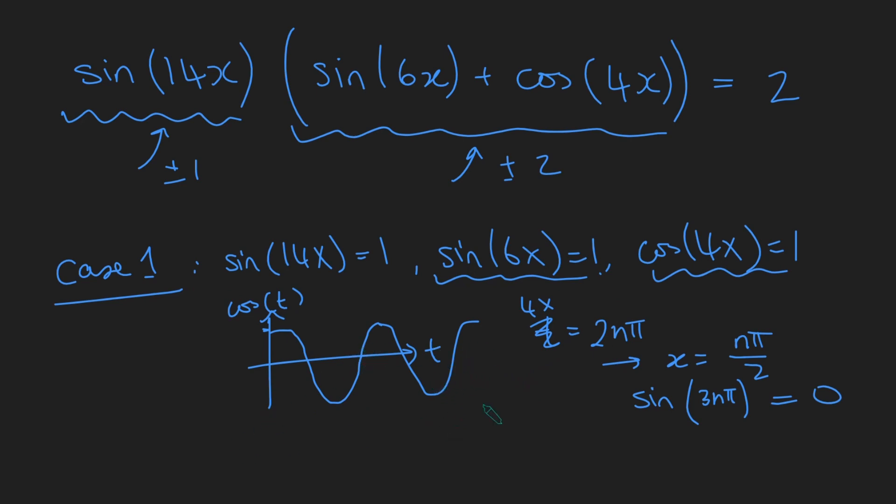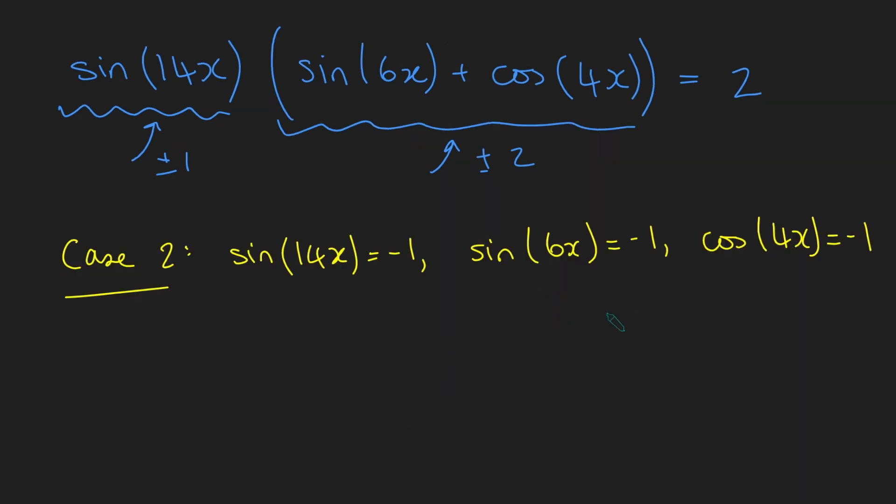All we have to do now is check case 2 when this is minus 1 and each of these are minus 1. Okay, so in this case, we have all of these important terms being minus 1. And again, we're going to start from this fact here. So again, just quickly drawing a cos graph. When is cos 4x minus 1? Well, it's when 4x is an odd multiple of pi. So either it's pi or it's 3 pi. So we get that 4x equals 2n plus 1 times pi, where n is an integer.